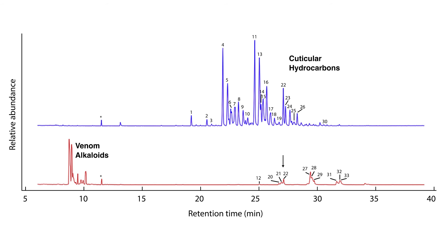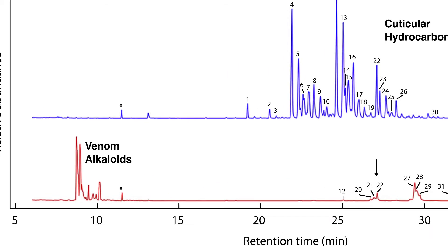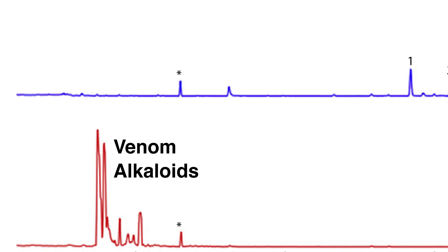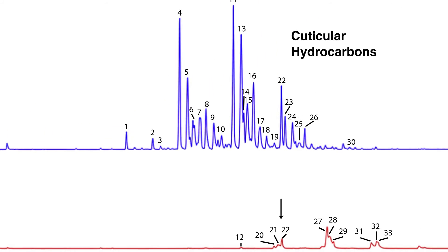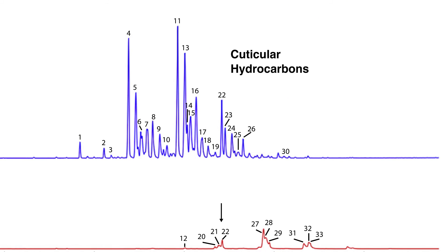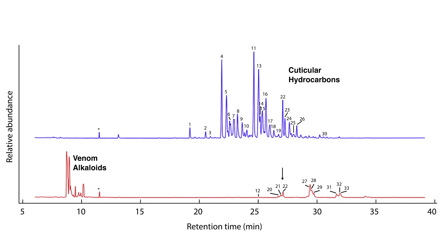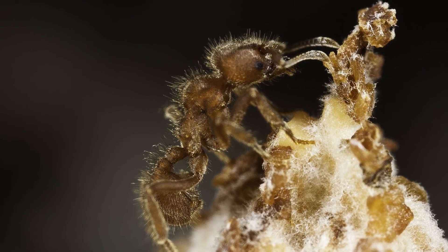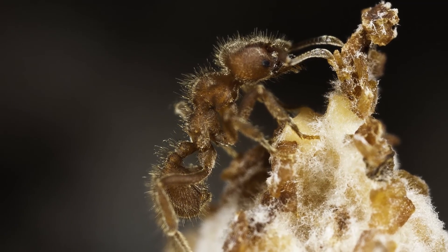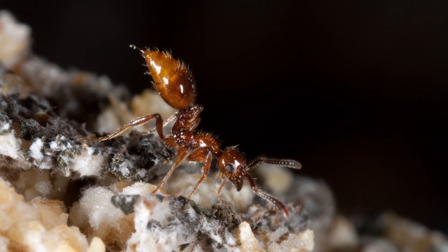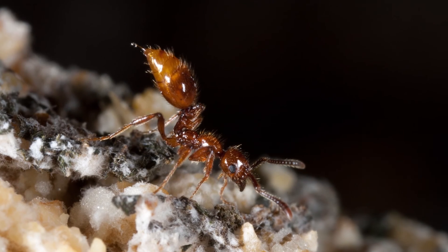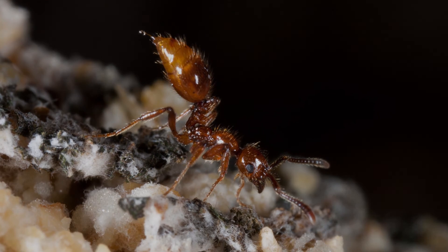We conclude that it is important to consider all chemical compounds produced by the parasites — not just cuticular hydrocarbons — to fully understand host-parasite communication. Although the farmers have evolved sophisticated ways to grow and maintain their garden, they have yet to solve the problem of parasite invaders.